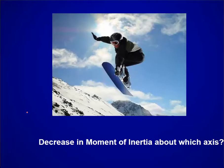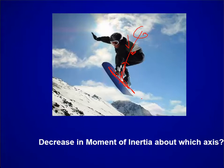Which axis can a snowboarder decrease their moment of inertia? They can do it in the ML axis because they crouch down. One thing to remember for a snowboard is they cannot reduce their moment of inertia about the longitudinal axis, because the board is rigid and you cannot bring it closer to you — unless it had some sort of hinge, which it does not.